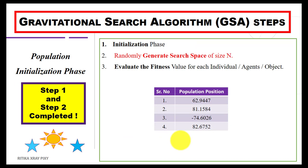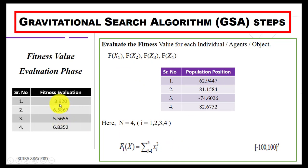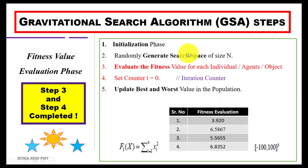Step one is done — we randomly generated the population for n search agents. Next step is to evaluate the fitness value for each search agent. We use a specific fitness function to calculate the fitness value. Using this fitness function we compute the fitness value for the first search agent, second, third, and fourth — putting in the values, we computed the fitness value for each search agent.